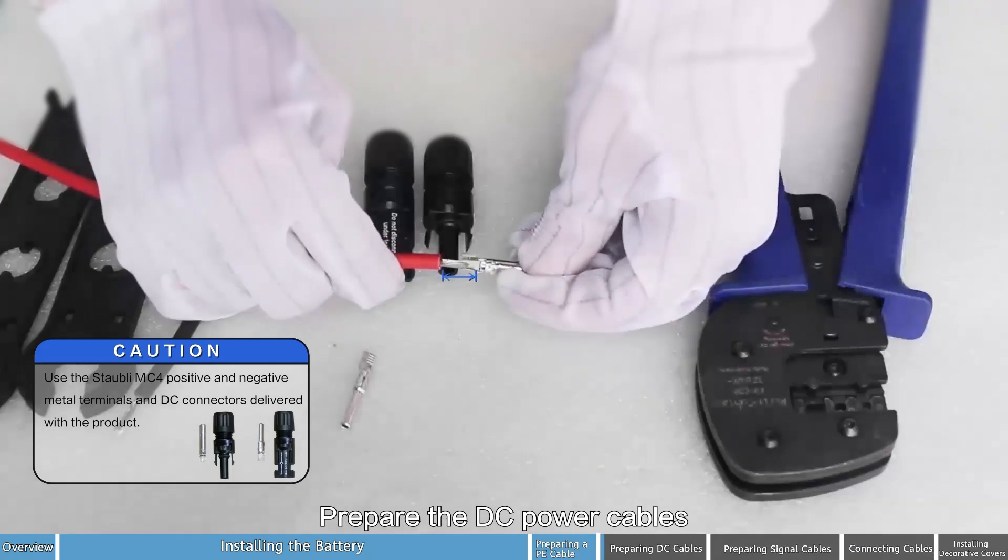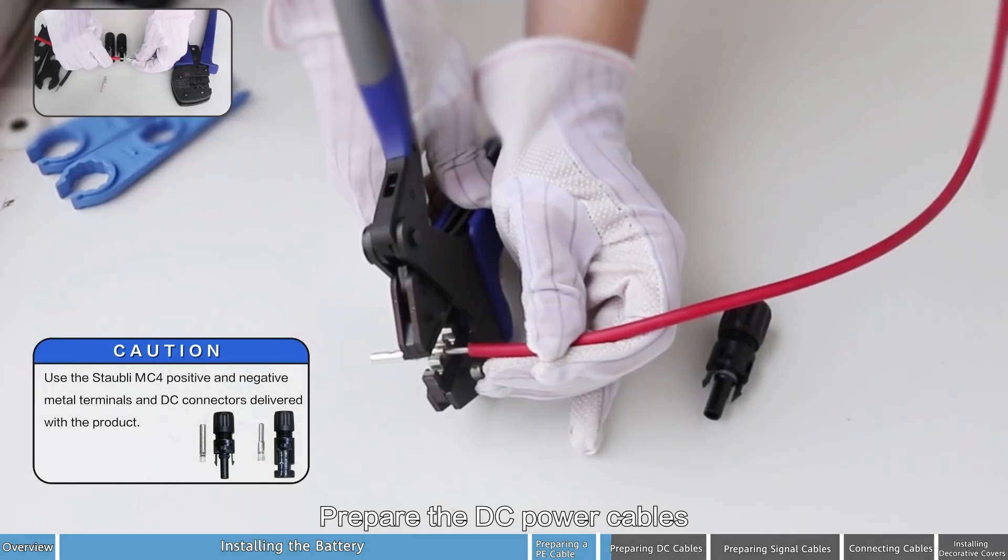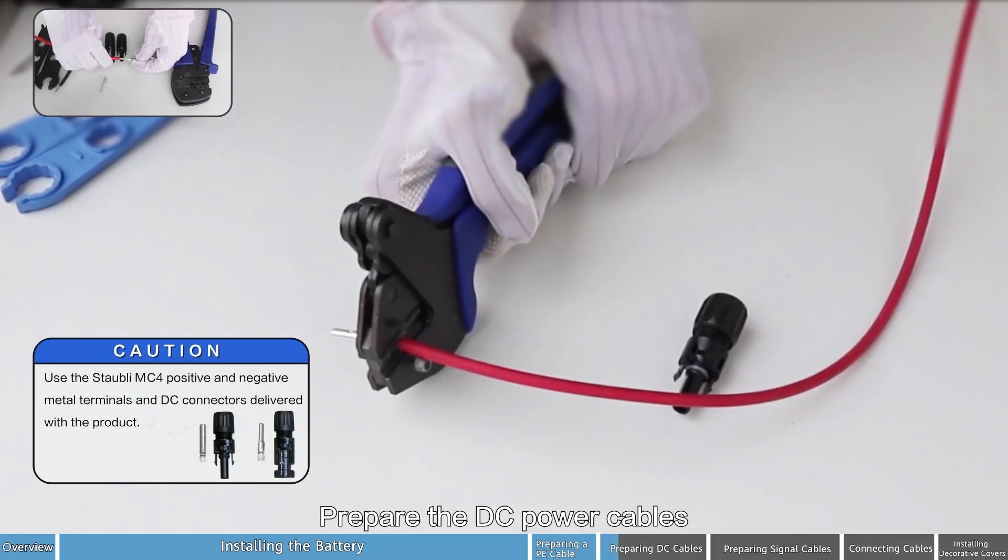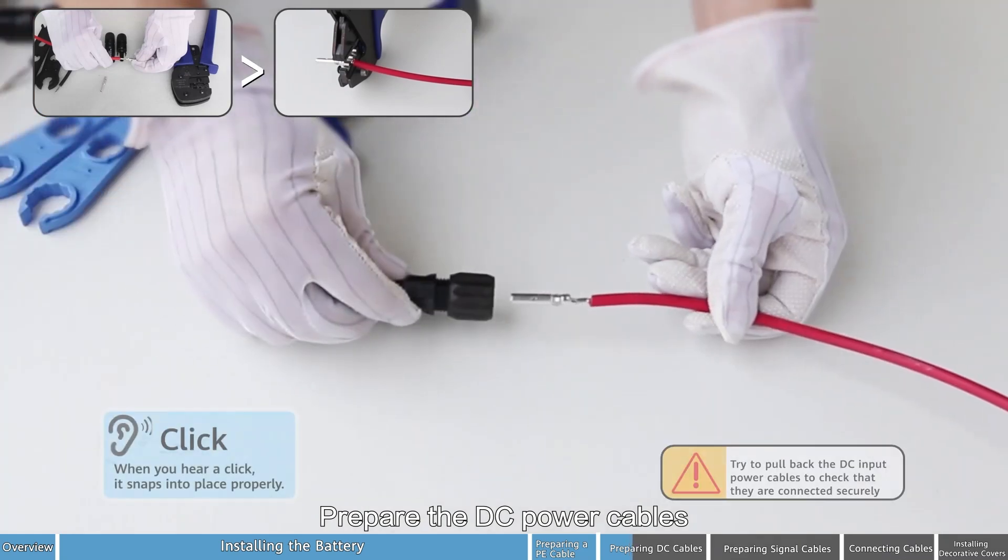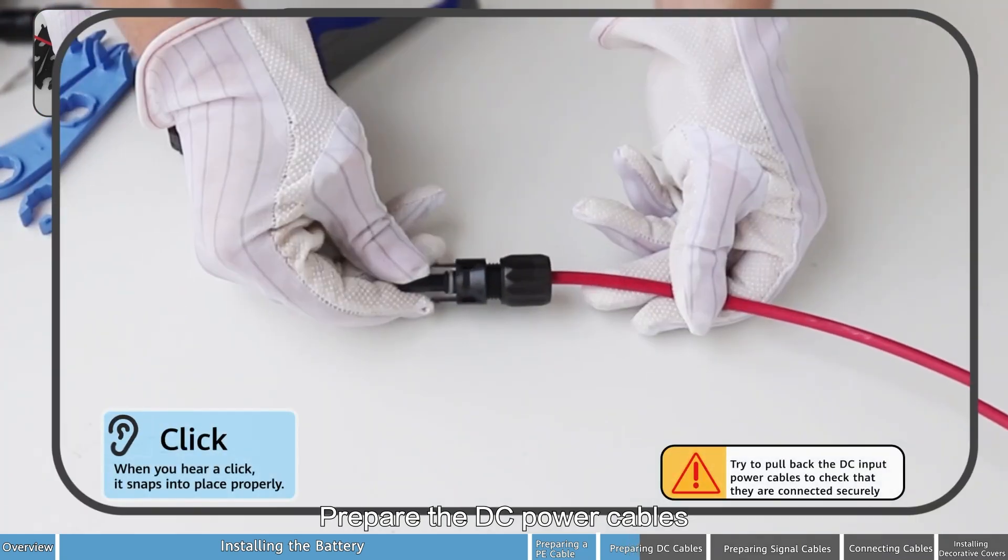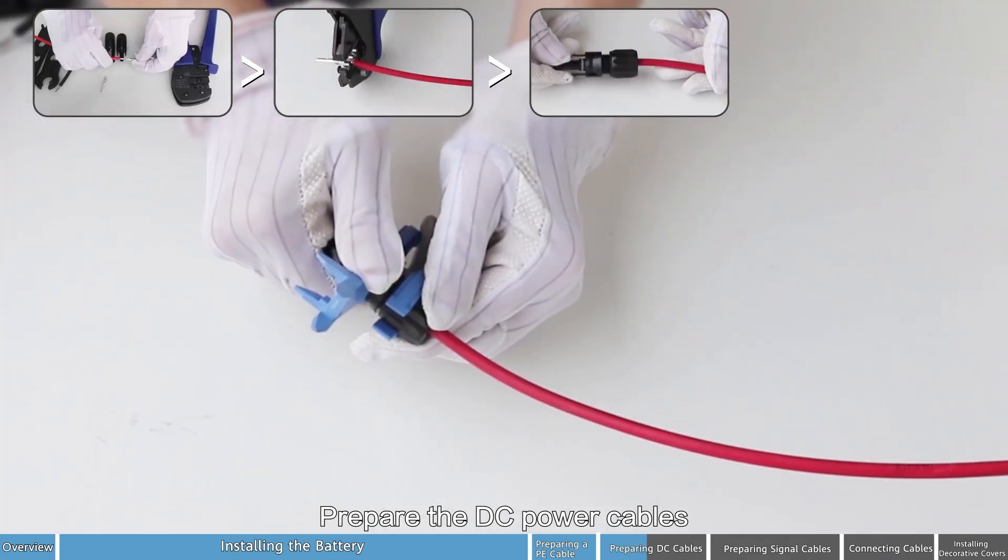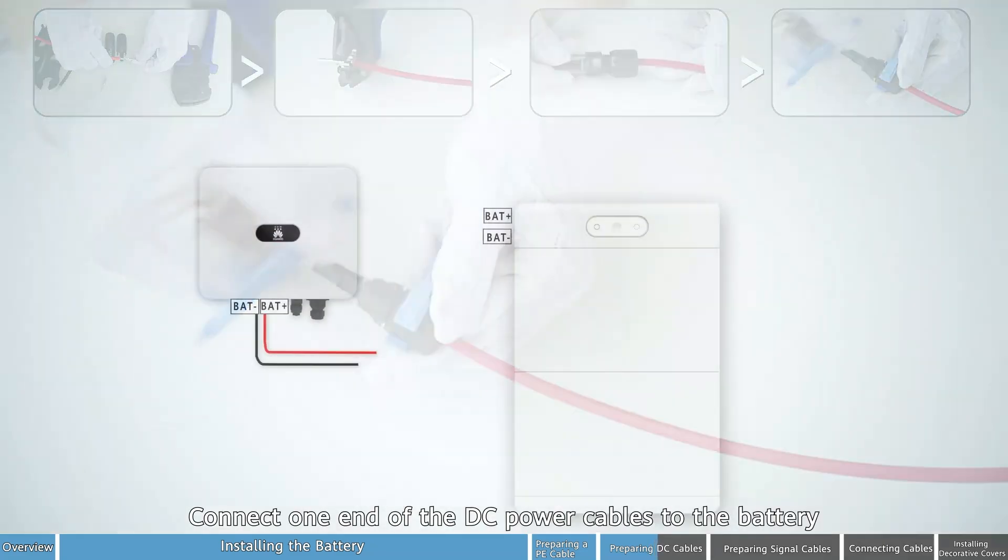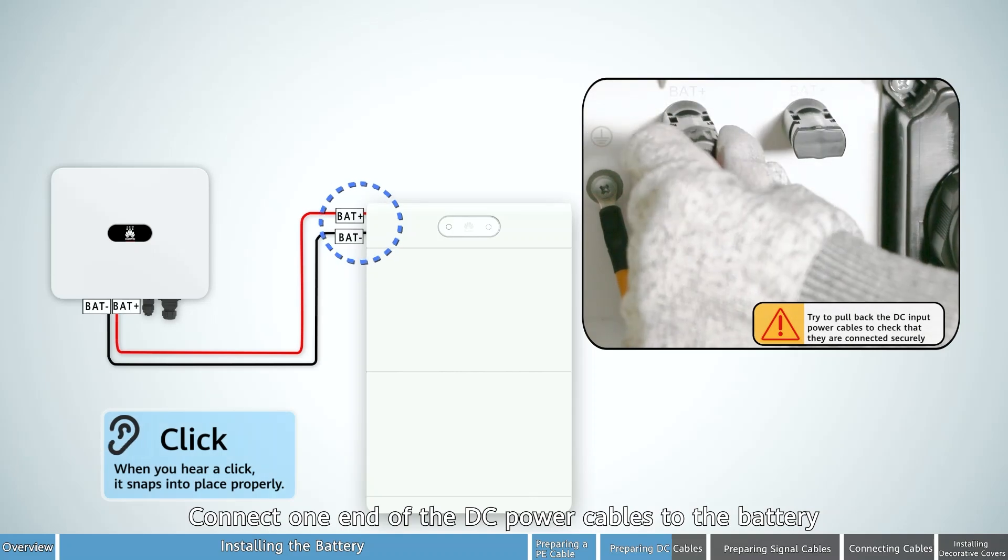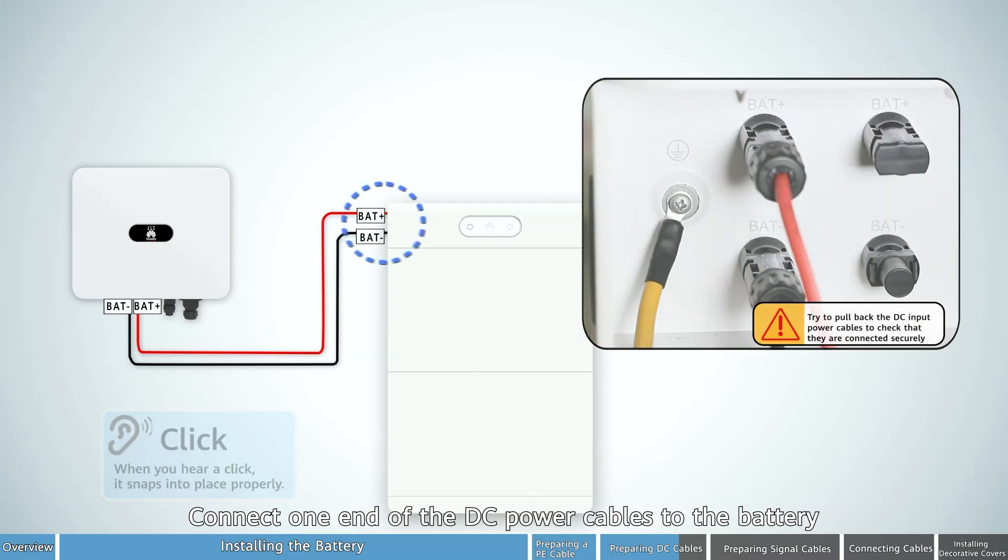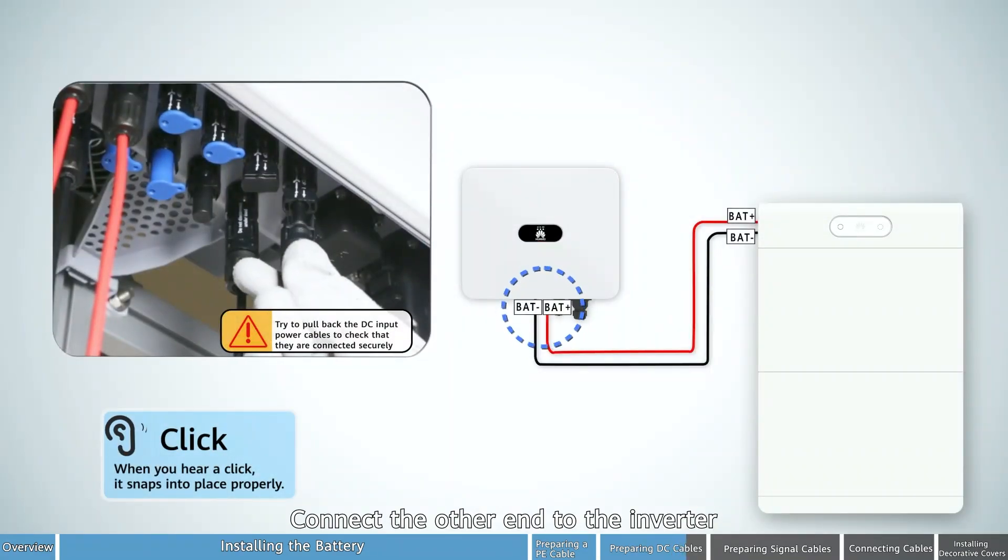Prepare the DC power cables. Connect one end of the DC power cables to the battery. Connect the other end to the inverter.